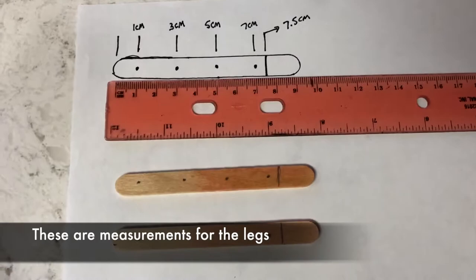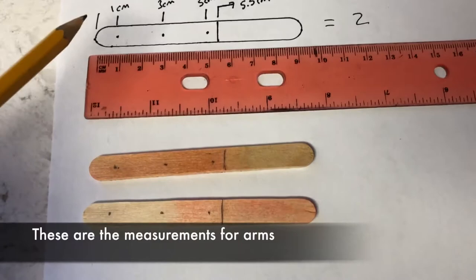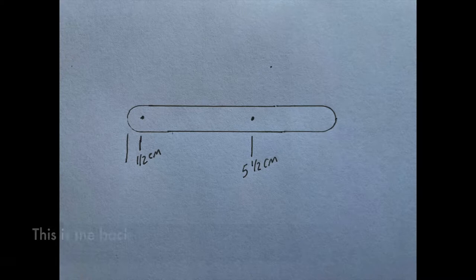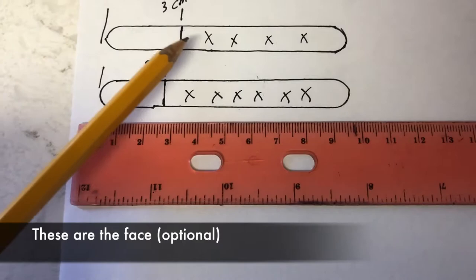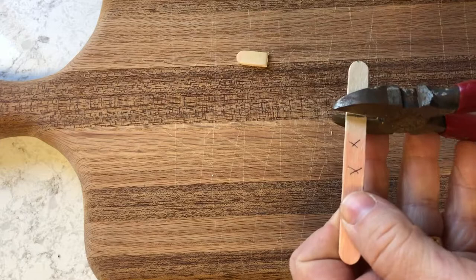Here are the measurements for the legs. As you can see, you have two different popsicle sticks that you're going to drill four different holes, and the measurements are there. And then we go on to the arms. There's three holes you're going to drill on two different popsicle sticks. So the back, this is the back, and it's just one popsicle stick with two different drill holes. And then here's the face with the measurements, and there's two different popsicle sticks.